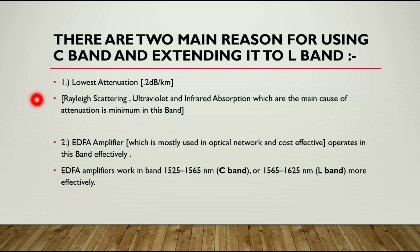There are three main reasons: Rayleigh scattering, ultraviolet and infrared absorption. These are the main causes of attenuation in the transmission line and these factors are minimum in this range. So these ranges are used for the DWDM system.